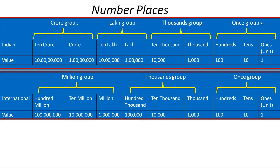Here in the Indian Number System, we have the 1s place, then 10s, then 100s. These 3 places are included in the 1s group. Then 1,000 and 10,000 are included in the thousands group. Lakh and 10 lakh are included in the lakh group. Same way, crore and 10 crore are included in the crore group.